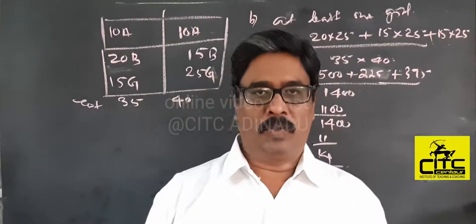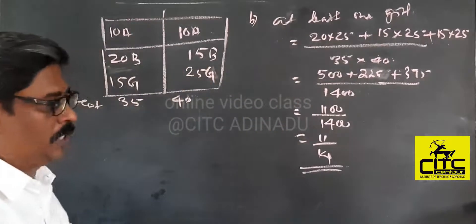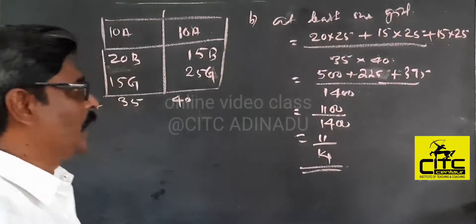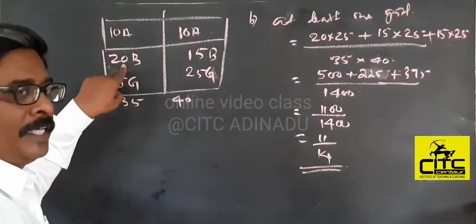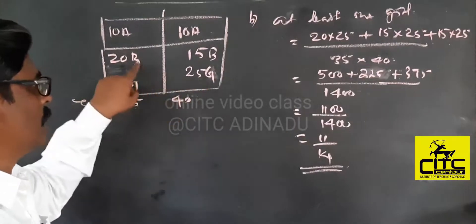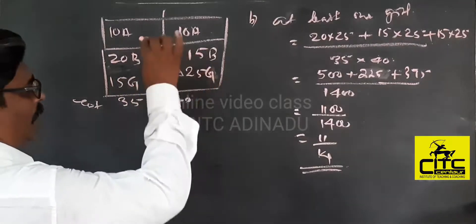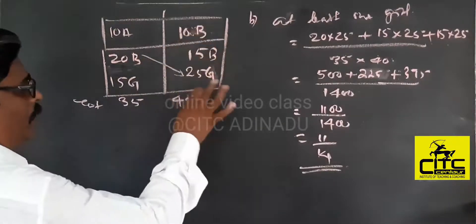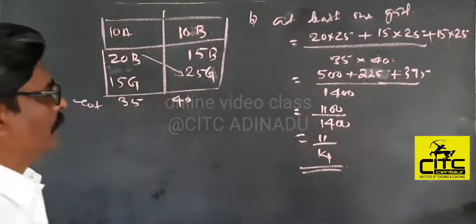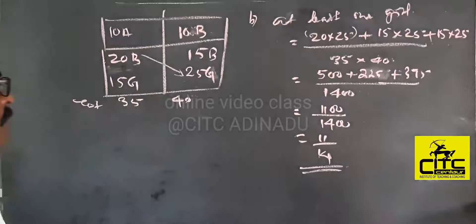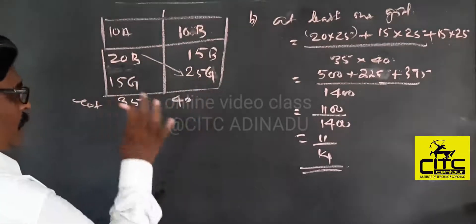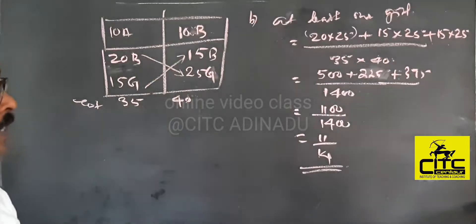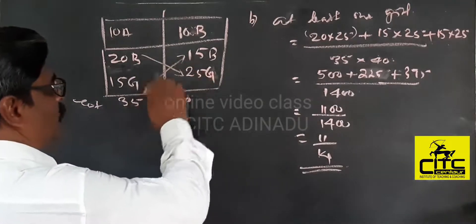Let's talk about part B — at least one girl. We will have a pen. Minimum one. Let's say here is 15. Here is 15. 15 times 15.